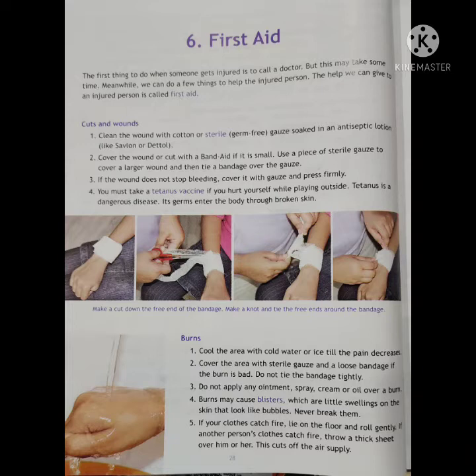Use a piece of sterile gauze to cover a larger wound, and then tie a bandage over the gauze. Kya hota hai? Woh cotton ka gauze hota hai, aapne hospital mein dekha hoga, toh uska hum use karke, upar bandage laga de. Agar zakhm bada ho, toh.